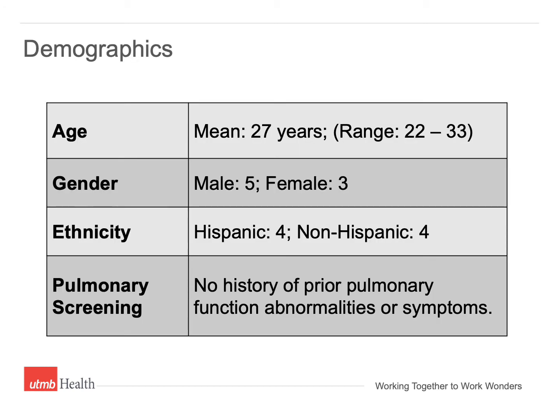These are the demographics for our volunteers. The age range was 22 to 33 years old with a mean of 27 years old. There were five male and three female volunteers, and among these, four were of Hispanic origin and four were non-Hispanic. All volunteers were screened prior to selection for pulmonary function disorders or abnormalities, and none of the volunteers had a history of any pulmonary dysfunction or symptoms at the time of the study.